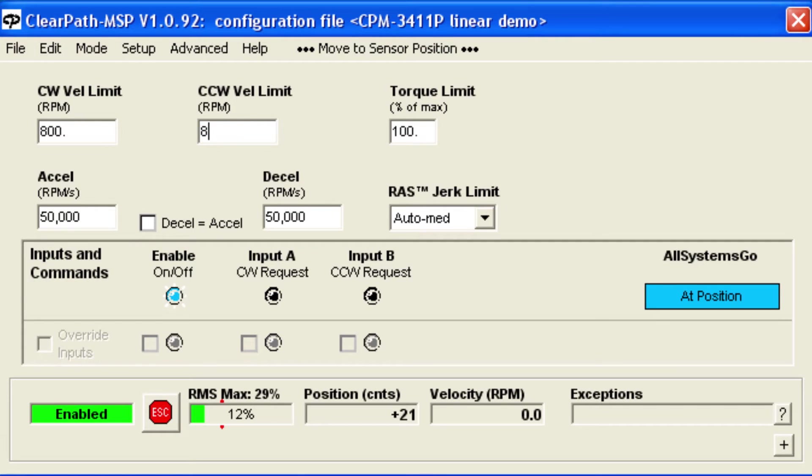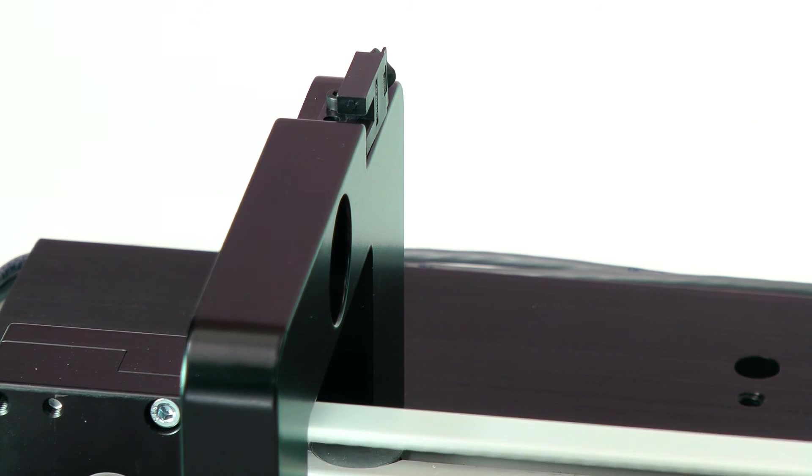Faster speeds, slower deceleration, and or higher RAS jerk limiting will cause the axis to move further into the sensor. This is okay and the stopping point will still be repeatable, but you need to make sure you allow for this deceleration distance.